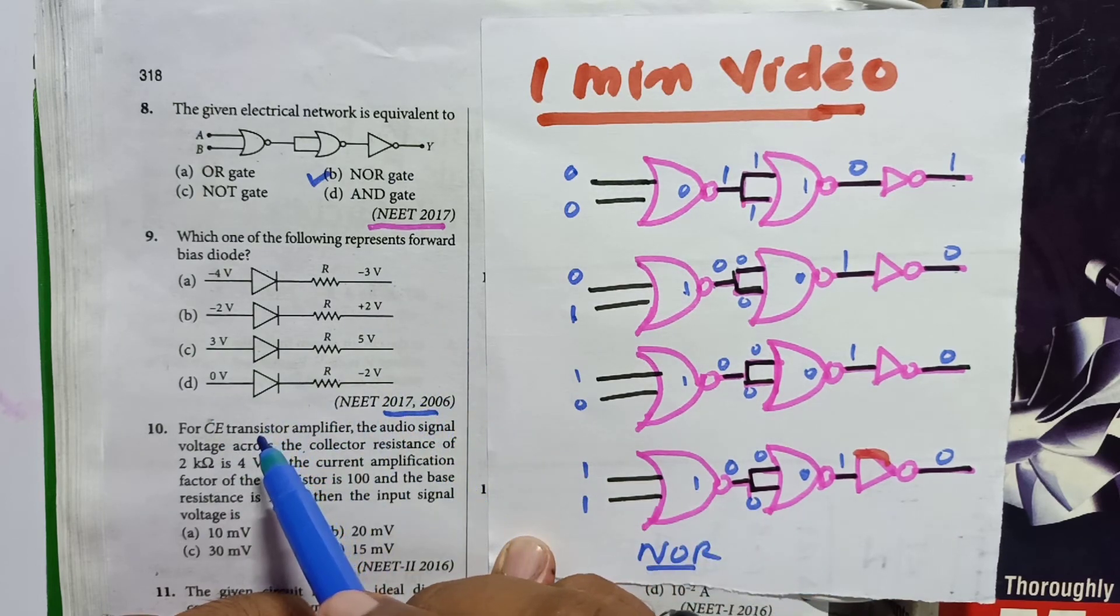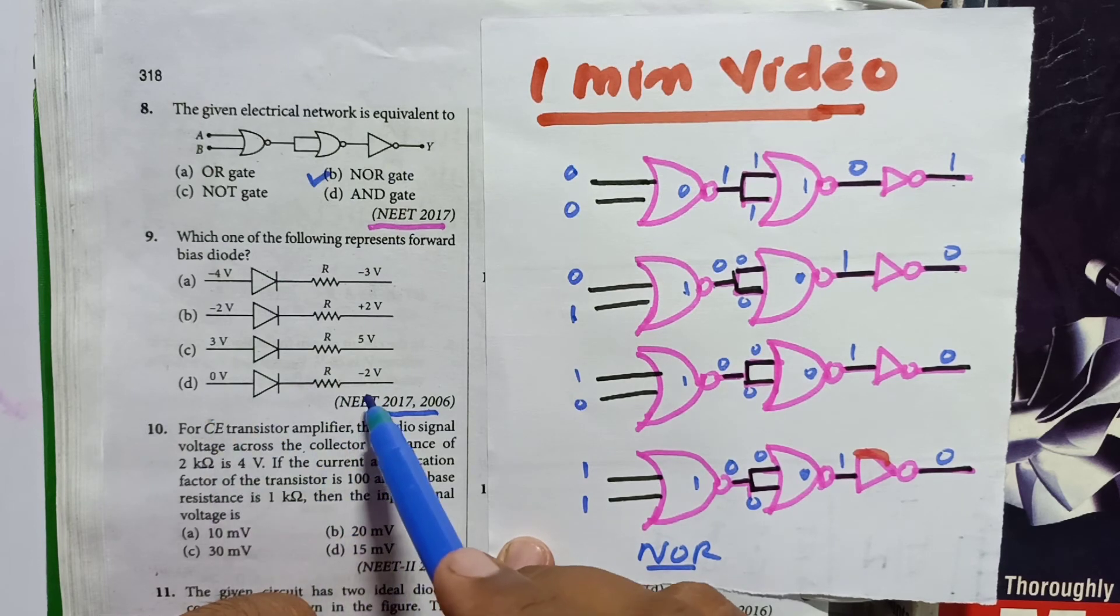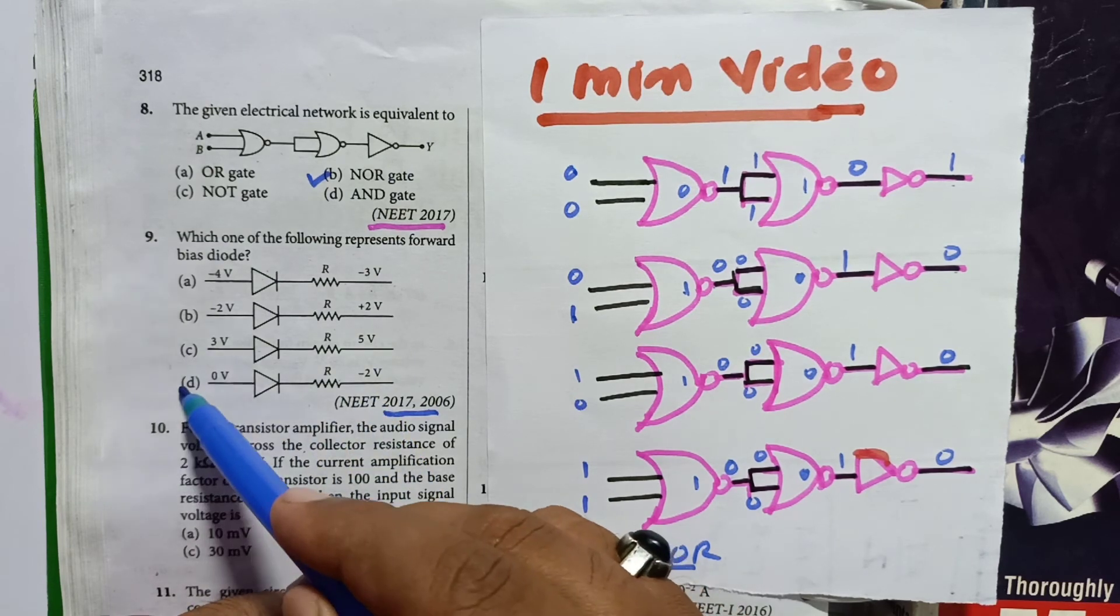In which case input is high and output is low? See 0 is high and minus 2 is low. The fourth option is the correct one.